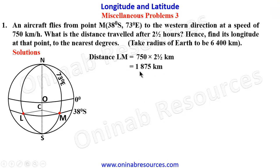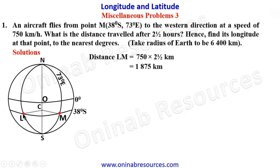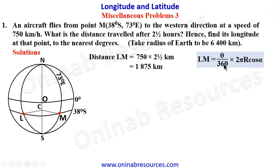We are going to use this information to calculate the angular difference between L and M, in order to find the longitude of L — the destination of the aircraft. We use the formula for distance along a small circle: distance equals theta over 360 times 2 pi r cos alpha, where alpha is the common latitude.